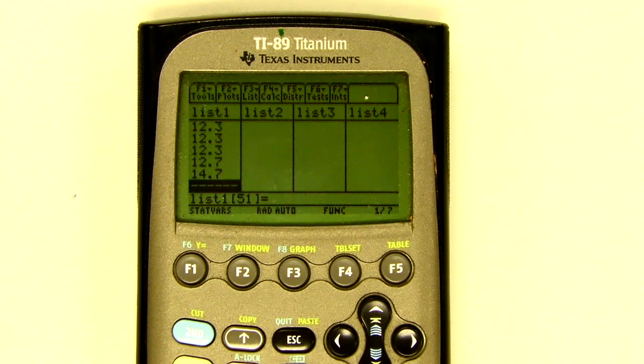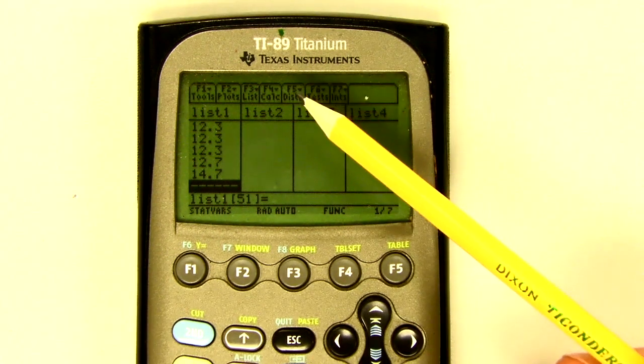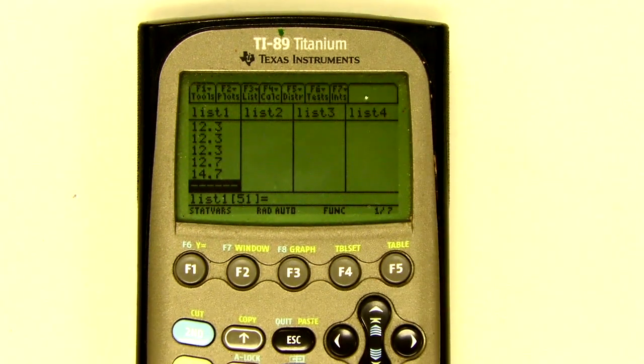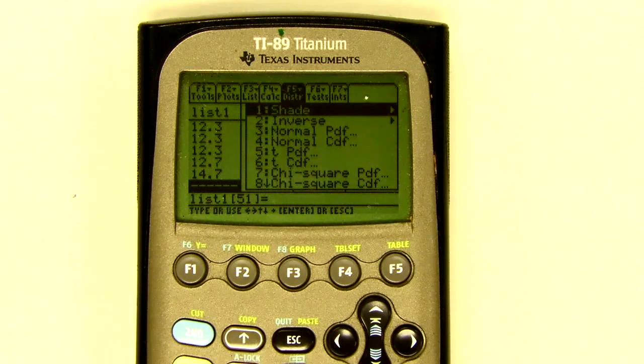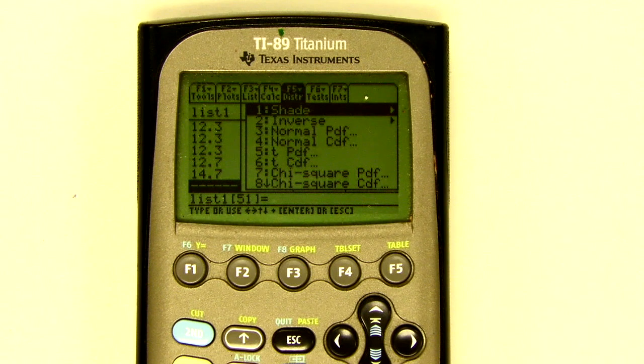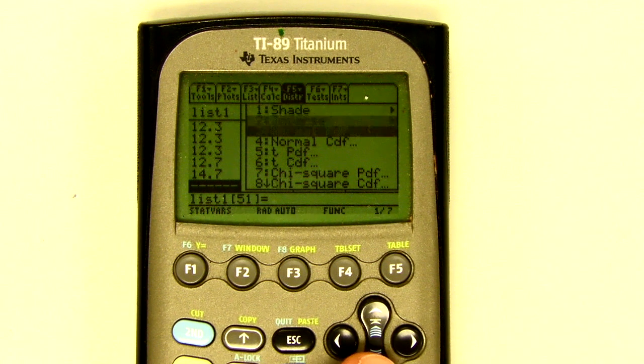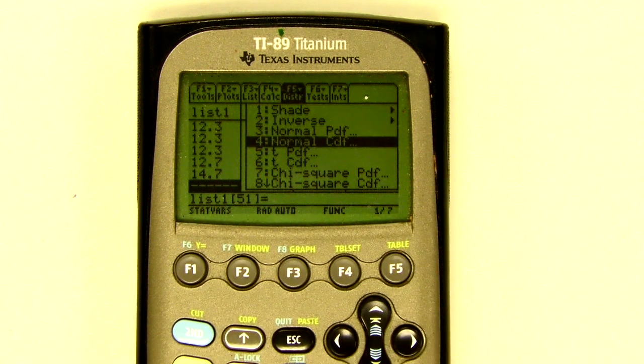What we're going to look at here is if you look across the top, look at that F5 menu. I know we've talked about the various menus up here, but we have F5, and that's our distributions menu. I'm going to go there right now, and we have lots of different choices in here, lots of distributions. We're going to use a lot of them this year. The one I want you to look at is choice number four, something called normal CDF. We always use normal CDF.